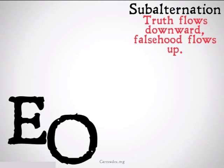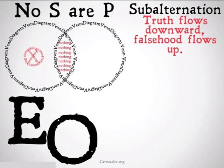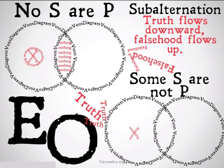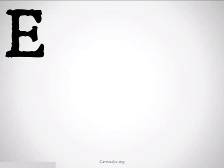This relationship also exists between E and O statements. No S is P — from that we can conclude that some S is not P — that's truth flowing downward. However, if it is not the case that some S is not P, then it cannot be the case that no S is P, because we need that X — that something — to exist in the P-only area for that E statement to be true. So truth flows downward, falsehood flows up.